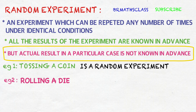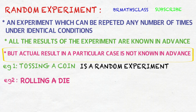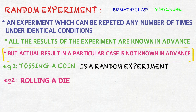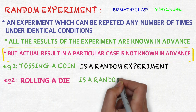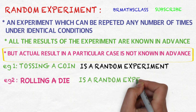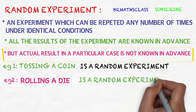Third condition: the actual result in a particular case is not known in advance. When I am going to roll a die, what it results exactly, I don't know. So rolling a die satisfies all three conditions. Therefore, rolling a die is a random experiment.